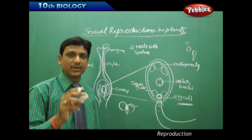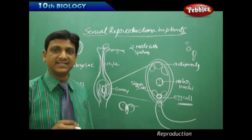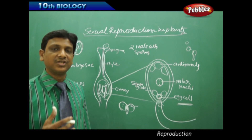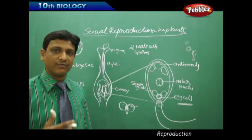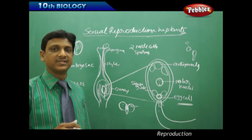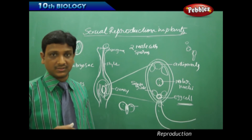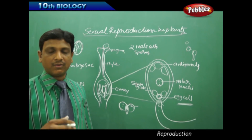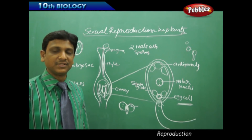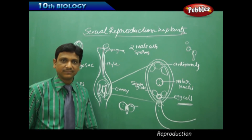The reproductive units of flowering plants — the seeds — are now ready. They grow into new plants when they germinate. Germination of seeds takes place under proper conditions; the seeds require air, water, and suitable temperature. When all these conditions are met and the seeds are placed in the soil, they start germinating.